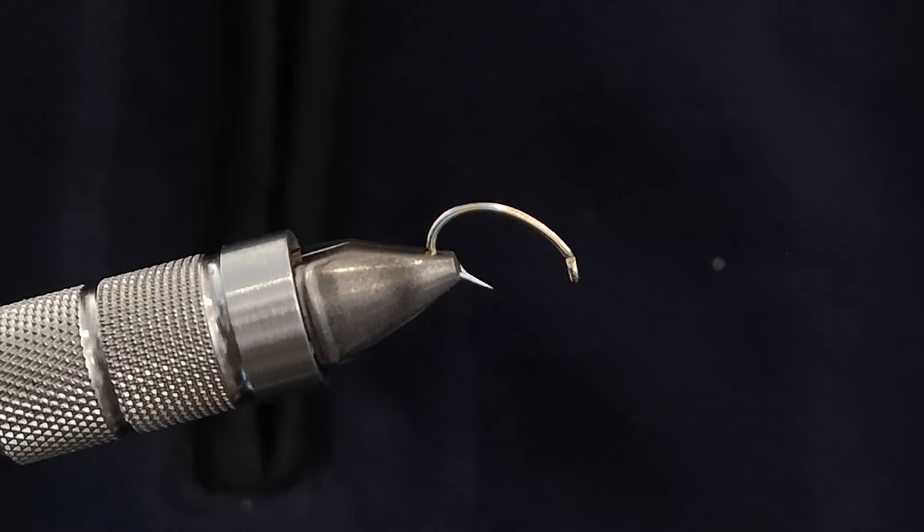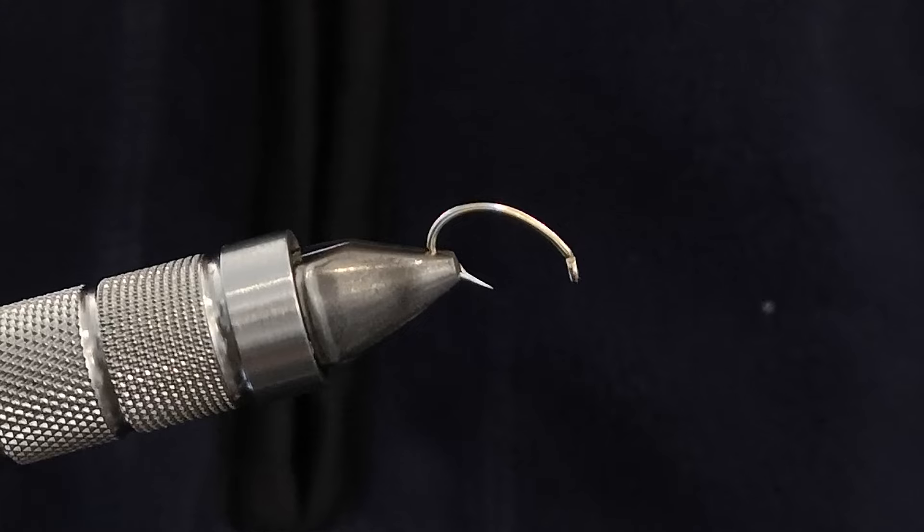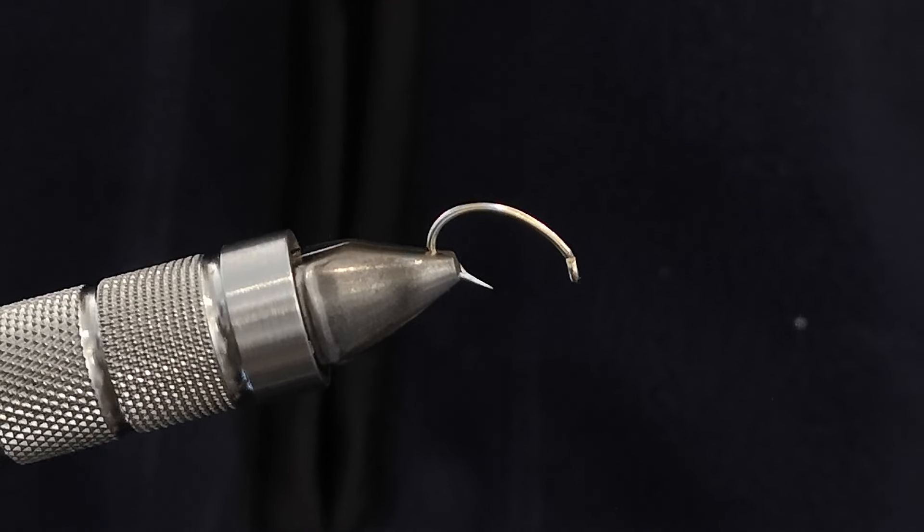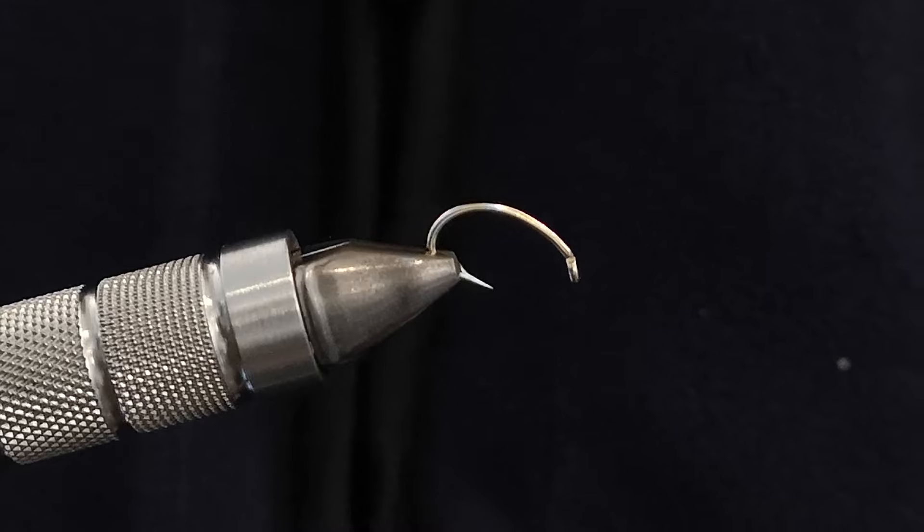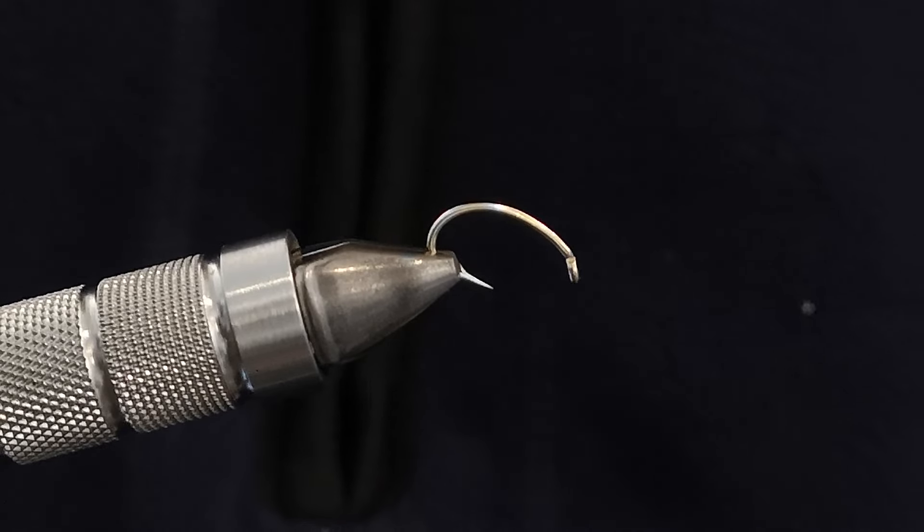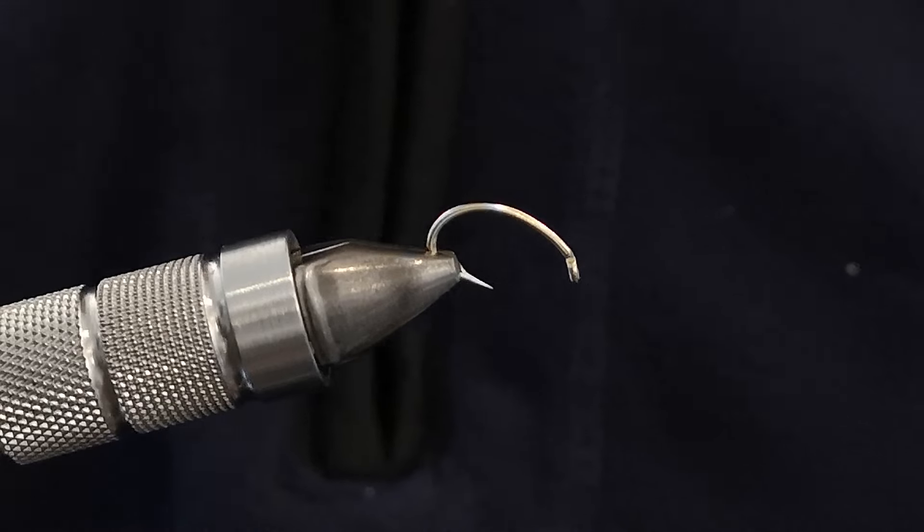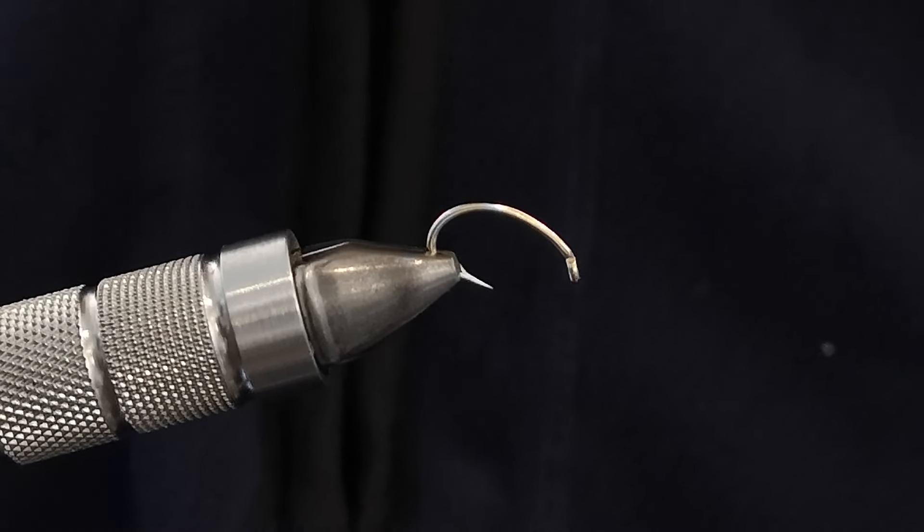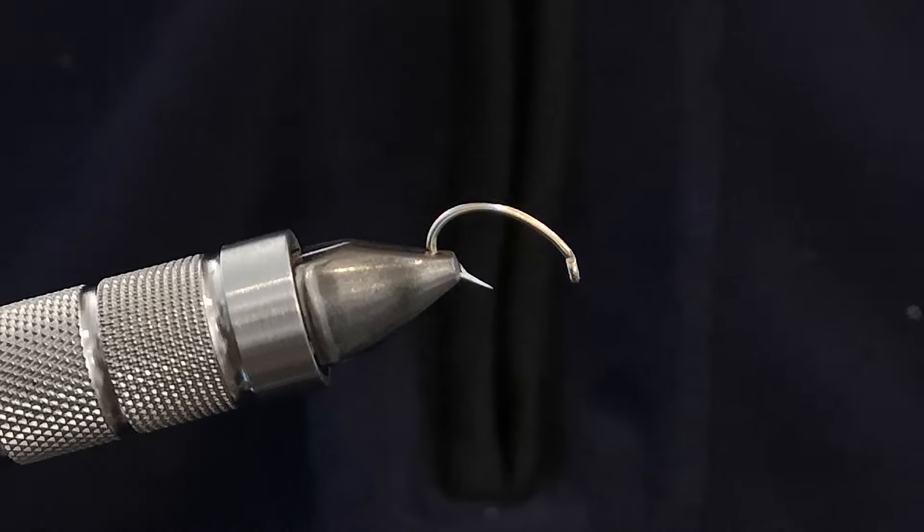I'm not really sure why the trout take it. It doesn't really look like it imitates anything in particular. You could say maggot but maybe not, but it really works. It could be it's just something the fish haven't seen but I strongly recommend you tie some up and give them a go and I'm going to show you how to do it.